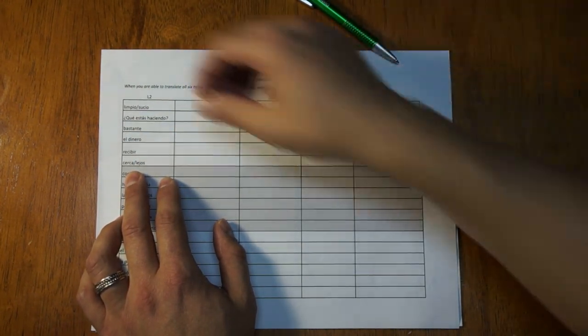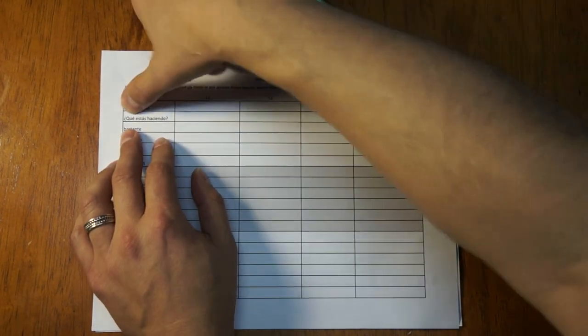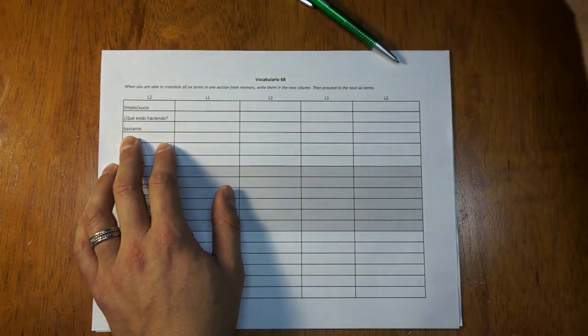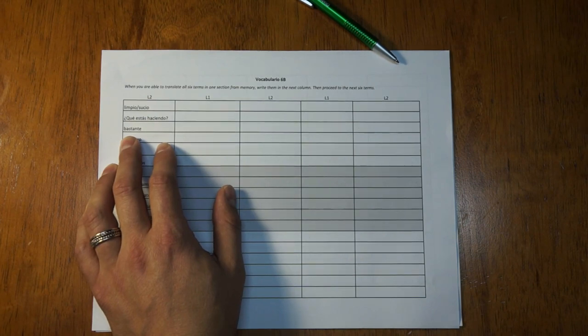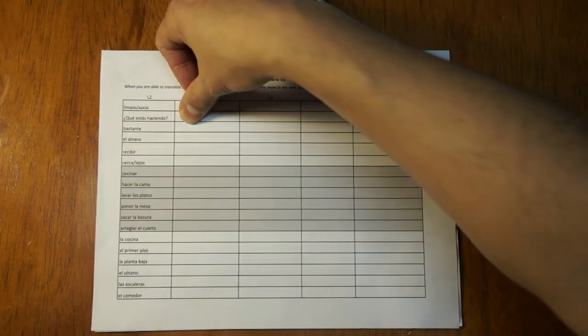You would check in your book. No, got it wrong. Okay, let's try it again. Limpio, sucio, is clean and dirty. ¿Qué estás haciendo? Is what are you doing. Bastante. Darn it, I forgot again. Let's look at it. It's enough. Bastante means enough. Don't forget it. Enough. Bastante is enough.